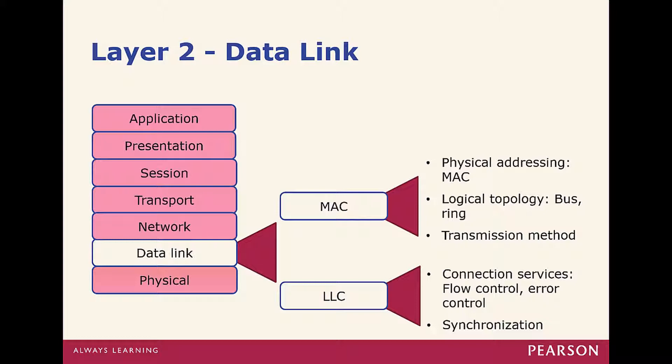At Layer 2, the Data Link layer, the unit is a frame. The Data Link layer is divided into two sublayers: the MAC (Media Access Control) and the LLC (Logical Link Control). The MAC deals with physical addressing, topology, and transmission method, while the LLC deals with connection services like flow control, error control, and synchronization.